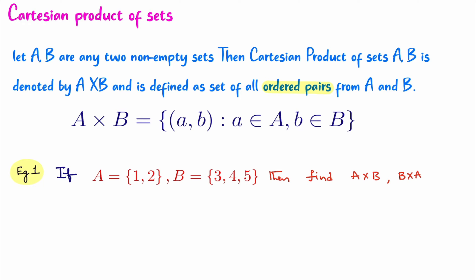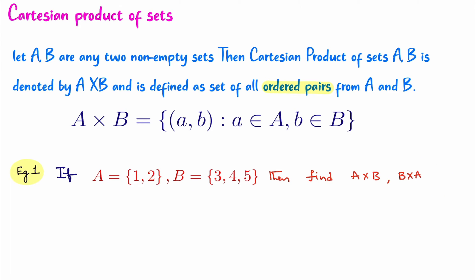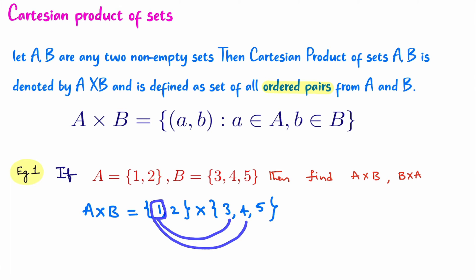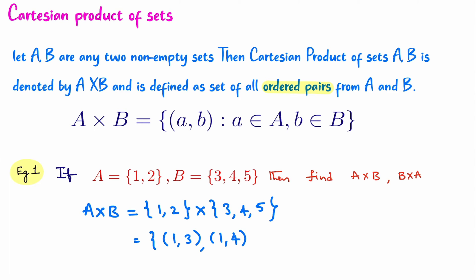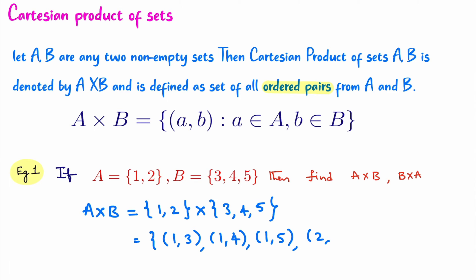Set A is {1, 2} and set B is {3, 4, 5}. Let's find A cross B and B cross A. To calculate A cross B, you take one element from set A and pair it with all elements in set B: (1,3), (1,4), (1,5). Then take the second element and pair with all elements of set B: (2,3), (2,4), (2,5). For B cross A, take elements of B and pair with all elements of A: (3,1), (3,2), (4,1), (4,2), (5,1), (5,2).